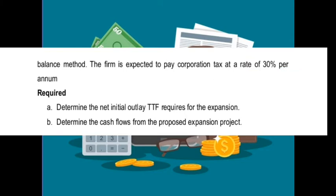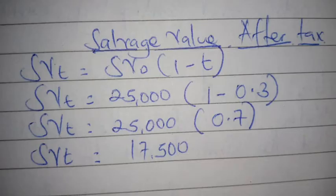The question required us to determine the net initial outlay — we've finished that — and determine the cash flows from the proposed expansion project. We already finished the intermediate cash flows, so we are remaining with the terminal cash flows. In this video we shall calculate the terminal cash flows, and to do so we first calculate salvage value after tax using the formula: salvage value before tax × (1 − t).